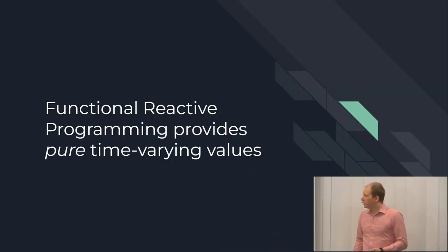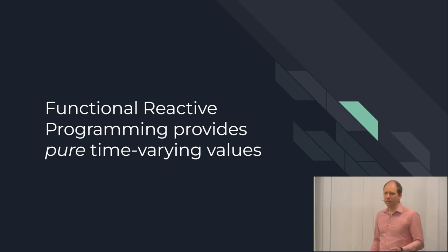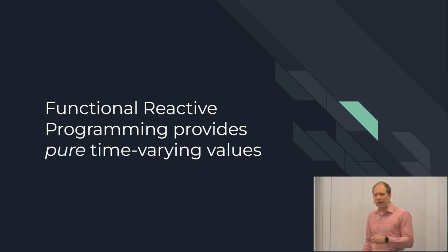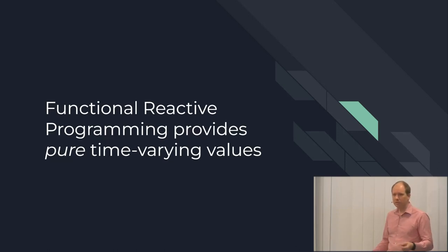Behaviors and events are pure. The reason is that you can tell everything you need to know about a behavior or an event to define its semantics just from looking at the definition site. You can duplicate, reorder, and do all the normal things you can do with pure values with these — even though under the hood there's mutation going on. In fact, lazy values in Haskell are mutable under the hood too, so we're actually used to working with pure values that are, in fact, mutable.